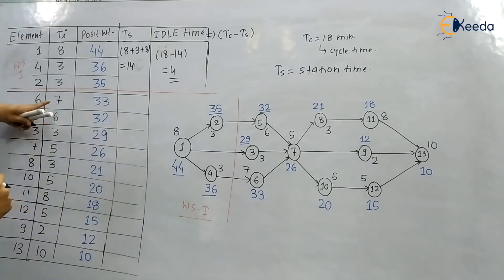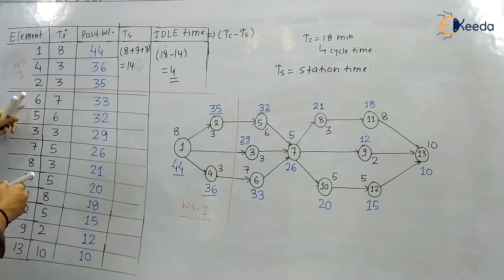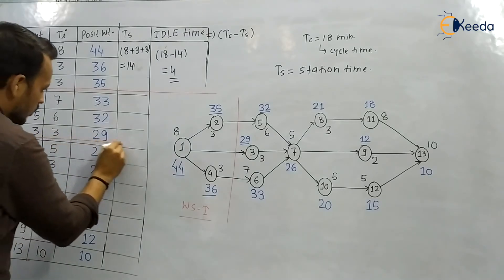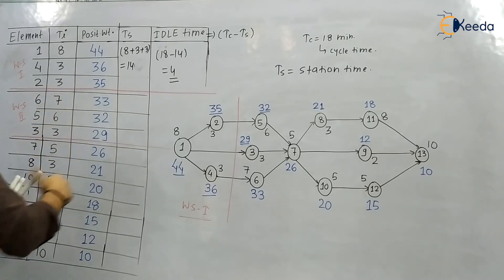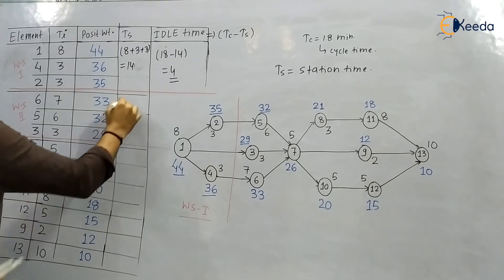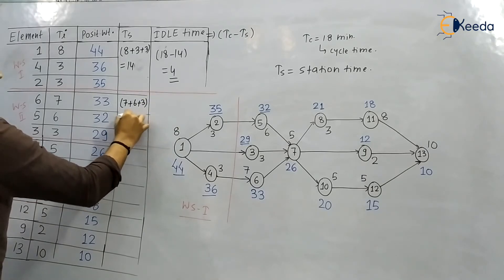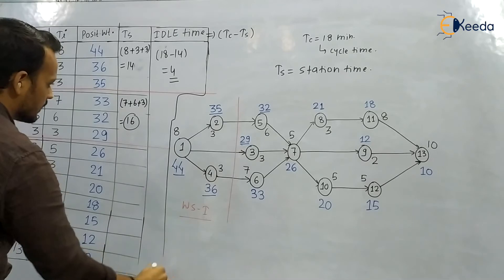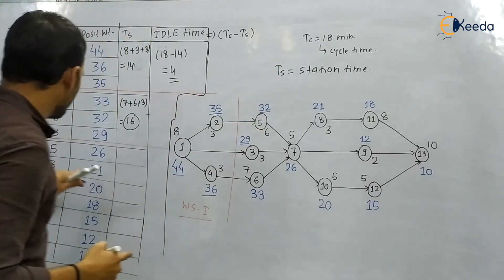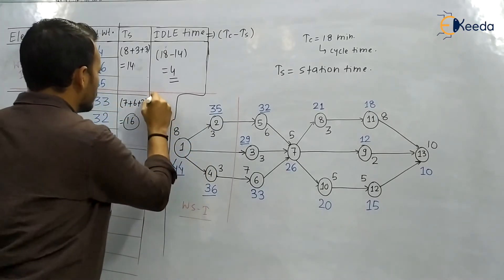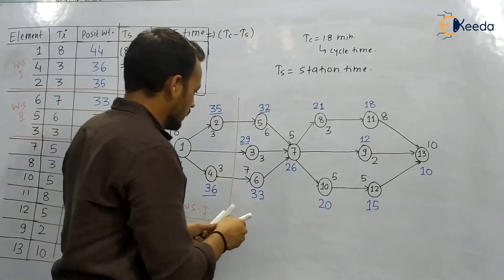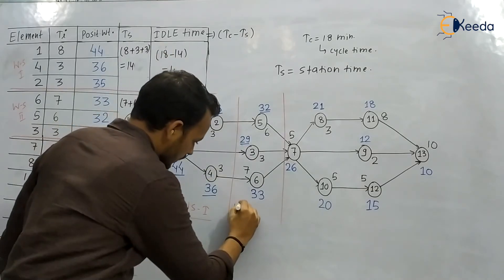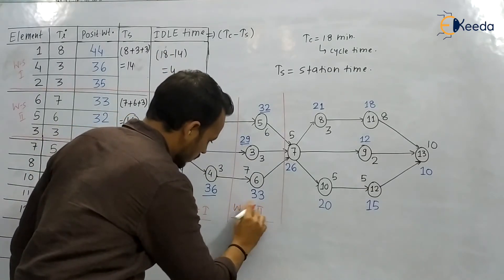For Workstation 2, we take elements 6, 5, and 3 with task times 7+6+3=16 ≤ 18. Adding the next element (task time 5) would give 21 > 18, which is not allowed. So elements 6, 5, and 3 form Workstation 2 with Ts=16 and idle time = 18−16 = 2.